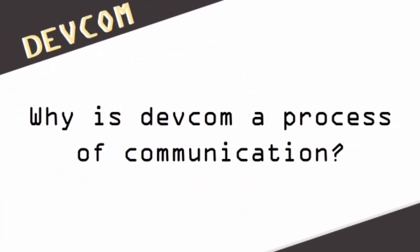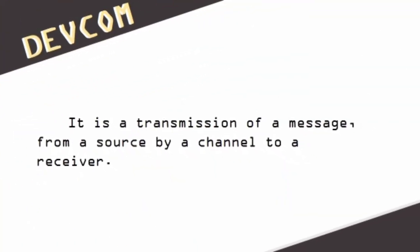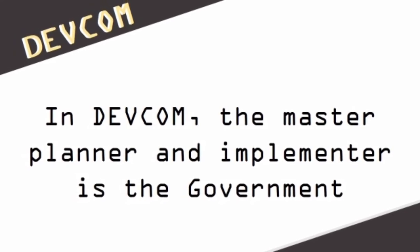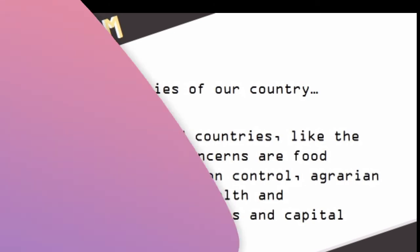Why is DEVCOM a process of communication? It is a transmission of a message from a source by a channel to a receiver. In DEVCOM, the master planner and implementer is the government, tackling the urgent priorities of our country. In third world countries like the Philippines, the concerns are food production, population control, agrarian reform, nutrition, health, and sanitation, cooperatives, and capital formation.